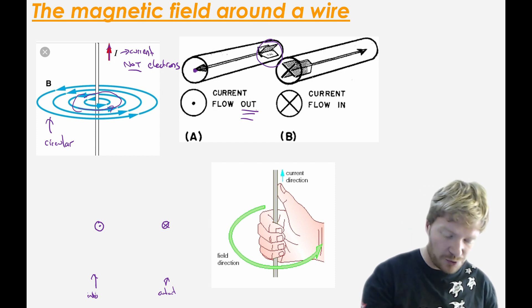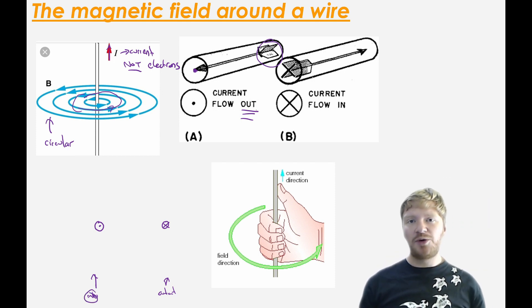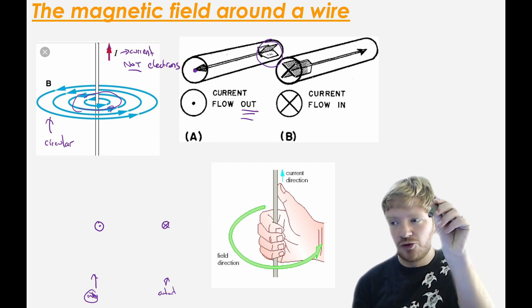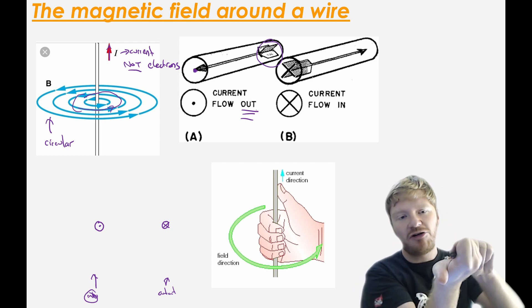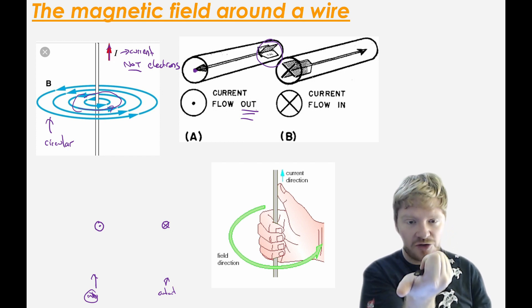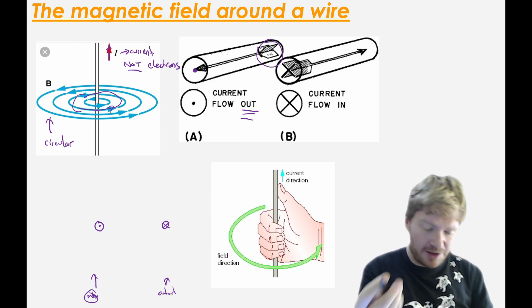So, for the first one, for the into the page, which way will the field go? Clockwise or anti-clockwise? Well, it's pretty simple. Again, you point your pen so that the pen nib is pointing in the direction. In this case, into the page. And you grab it with your thumb pointing towards the pen nib. So I can see that my fingers are curving around this way.